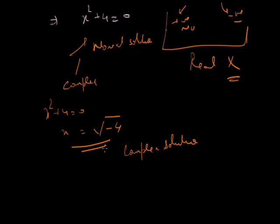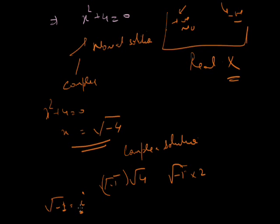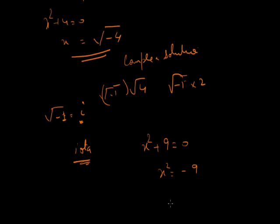We need to talk about what the square root of minus 4 means. We can write it as the square root of minus 1 times the square root of 4. Root 4 is 2. The square root of minus 1 gets a new name — we call it iota, denoted by the letter i. This i is called iota. So for example, x squared plus 9 equal to 0 means x squared equals minus 9, and x equals 3 iota.